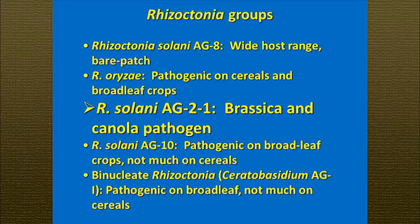Here's a list of all the different Rhizoctonia groups we have in some of the dryland areas of the Pacific Northwest. What I want you to focus on is Rhizoctonia solani AG2-1. This is what we refer to as a brassica or canola pathogen, and it's responsible for most of the damping off we see in canola.